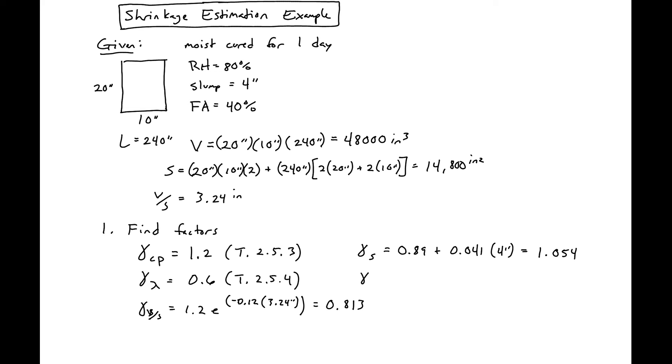Finally, our factor for the amount of fine aggregate is 0.3 plus 0.014 times 40 for 40% fine, which equals 0.86. Now we can calculate our ultimate strain.